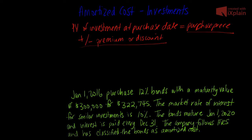IFRS 9, which is effective January 1st, 2018, only permits companies to classify investments as amortized cost if they intend to hold the bond to maturity. The bond will not be sold, but the company has a history of holding the bond to maturity to obtain the cash flow from the bond throughout the period from purchase to maturity. Therefore, after the adoption of IFRS 9, the use of the amortized cost model is expected to significantly decrease as this is quite a specific criteria.